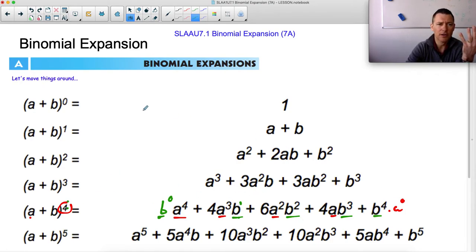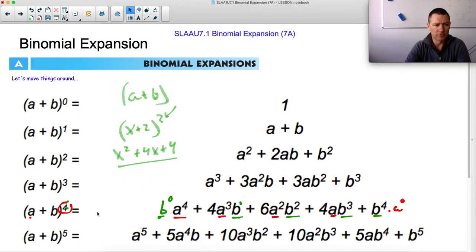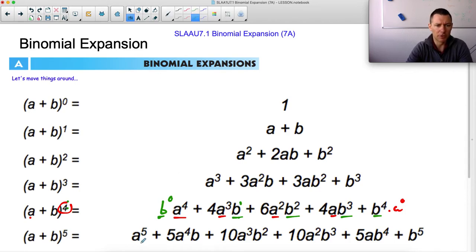Same. So if there's four things here, you start with b to the zero and you have b to the one, two, three, four. So if this is four, there's five terms here. Just like if you have a plus b squared, or let's call it x plus two squared, this is going to turn into a trinomial x squared plus four x plus four. So if there's two things, if this is squared and you get a binomial, when you expand it, you'll get three things. So here, a plus b to the fifth will give you six terms. One, two, three, four, five, six.